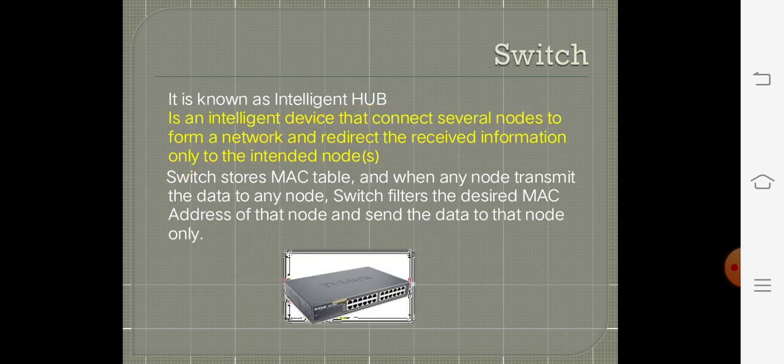The next one is the switch. In our lab we can also see a switch device, which is an intelligent hub. The word 'intelligent' implies that a switch will send received information only to the destination from the sender. No other devices will handle the data. Switch stores a MAC table, and when any node transmits data, the switch filters the desired MAC address and sends the data to that particular node only.